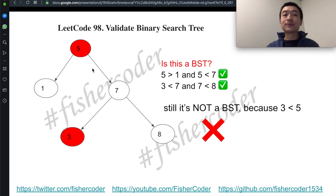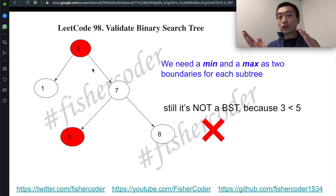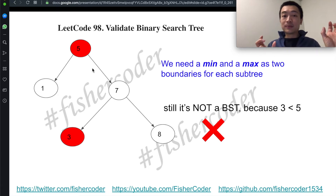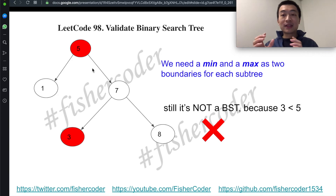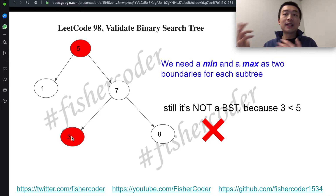What we can do is introduce two new variables: a minimum (min) and a maximum (max) boundary variable. Every time we traverse a particular subtree, we know the upper bound and lower bound. Instead of comparing with only the root's value, we compare with min and max to see if the node's value is still within that boundary. If that's the case, we can guarantee the entire tree is a valid BST.